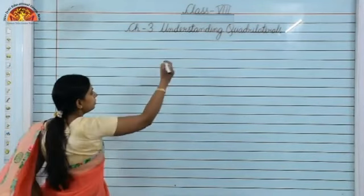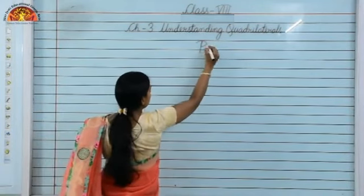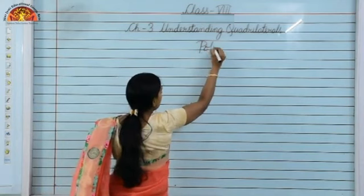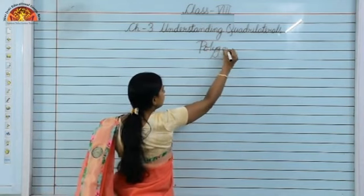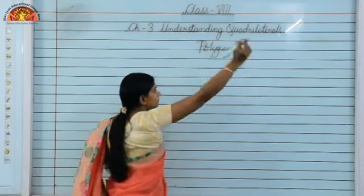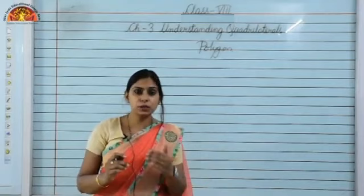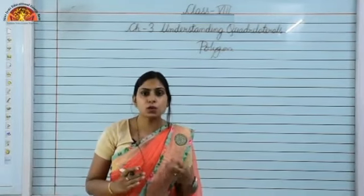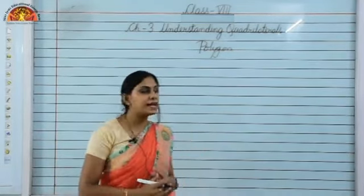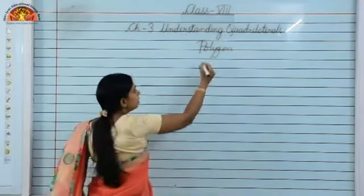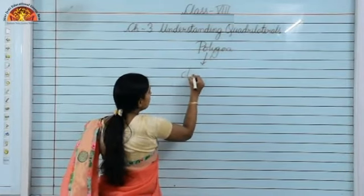First of all, what is a polygon? As students, you already know that a polygon is a closed curve made up of line segments.